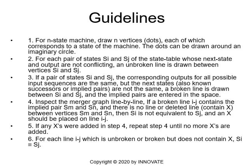Three: if for a pair of states Si and Sj the corresponding outputs for all possible input sequences are the same, but the next states — also known as the successors of the implied pairs — are not the same, a broken line is drawn between Si and Sj, and the implied pairs are entered in the space. Four: inspect the merger graph line by line. If a broken line Ij contains the implied pair Sm and Sn, and there is no line or a deleted line between vertices Sm and Sn, then Si is not equivalent to Sj, and an x should be placed on line Ij.